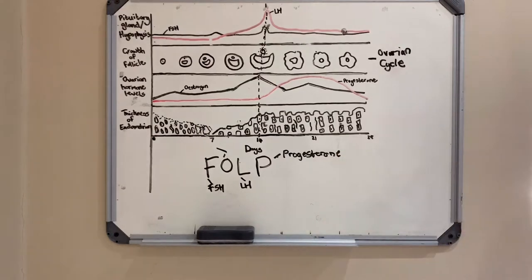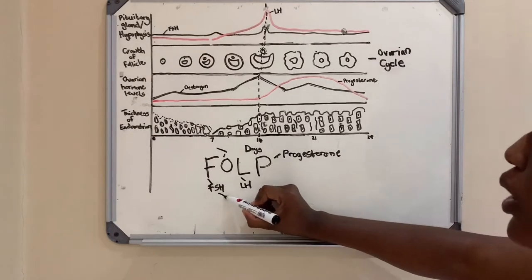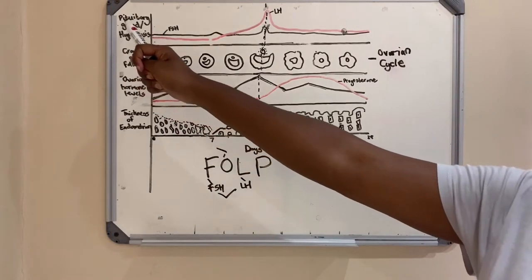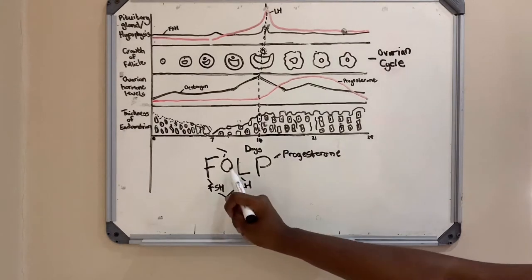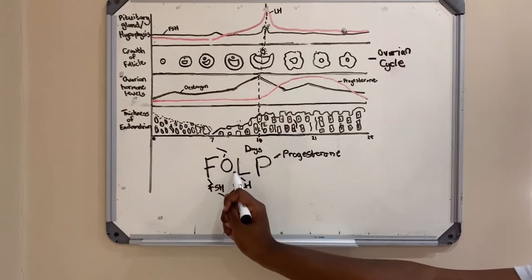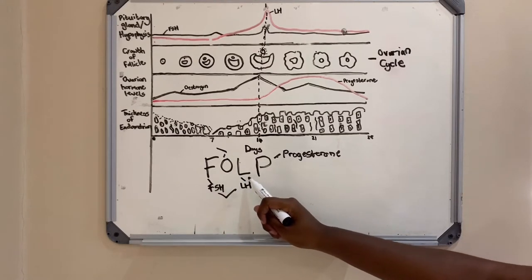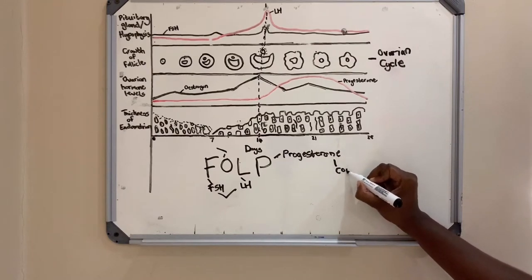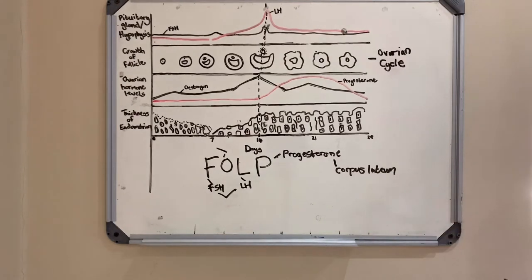You need to know where they're secreted from. These two are from the hypophysis or the pituitary gland - FSH and LH. Estrogen is secreted by the follicle as this follicle develops, and progesterone is secreted by the corpus luteum, which I will explain as I go on.